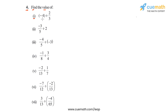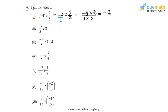In part 1, we have to calculate -4 divided by 2/3. We can write this as -4 multiplied by the reciprocal of 2/3, which is 3/2. Writing -4 as -4/1, we multiply the numerators (-4 × 3 = -12) and denominators (1 × 2 = 2), giving -12/2. Dividing above and below by 2, we get -6. So in part 1, the value of the expression is -6.